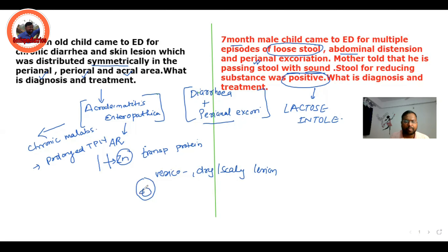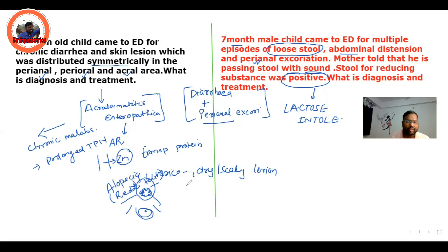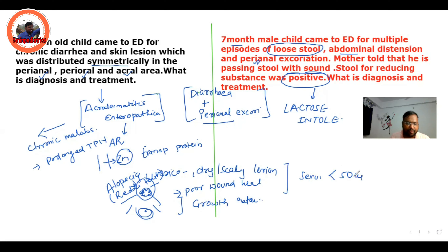The child presents with vesicobullous, dry, scaly lesions which are symmetrically distributed over the perioral area and the perineal area. In contrast, in lactose intolerance you get only excoriation over the perineal area. The child also has alopecia with a specific appearance, poor wound healing, and may have growth retardation. Investigation shows serum zinc level less than 50 micrograms per deciliter and alkaline phosphatase is decreased.